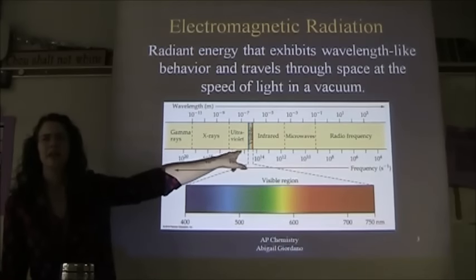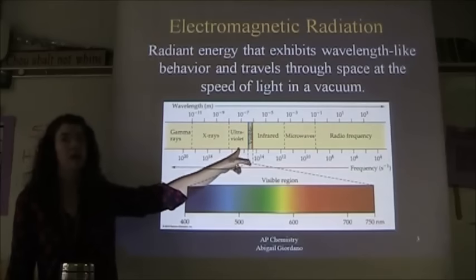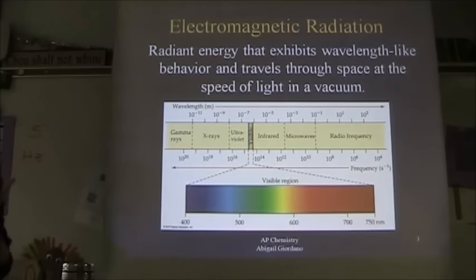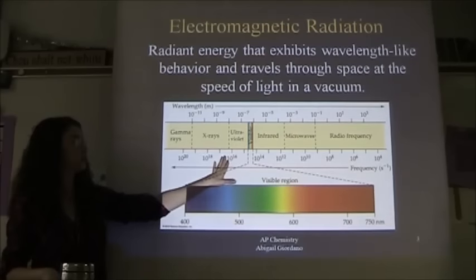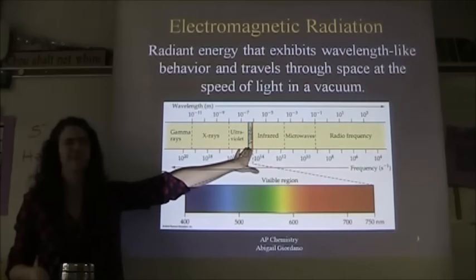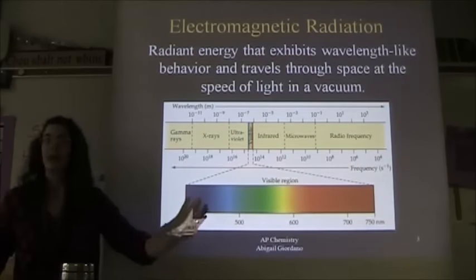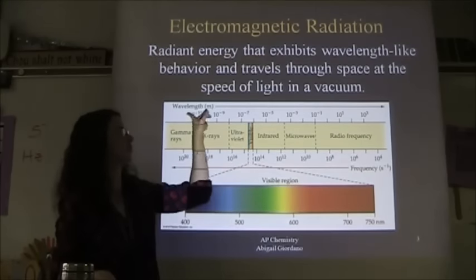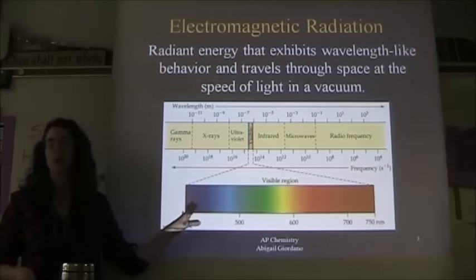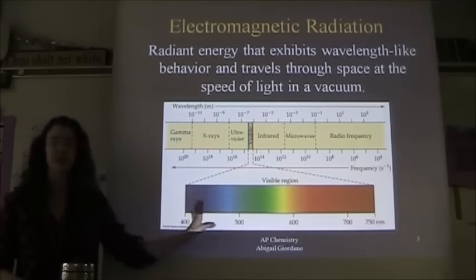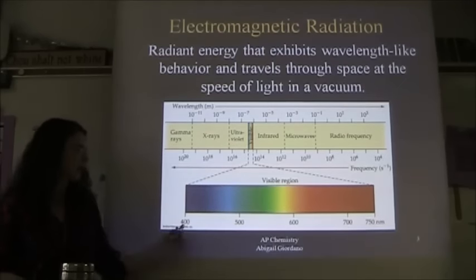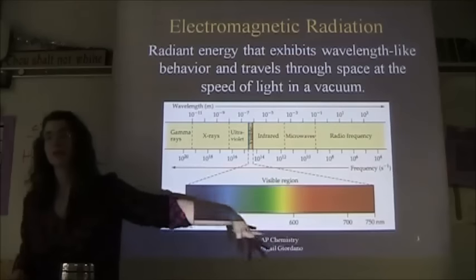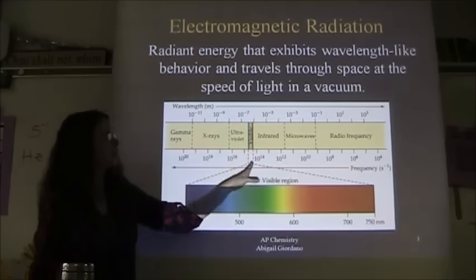Ultraviolet radiation is something we hear about a lot in summer. It's dangerous — it can cause skin cancer, burn you, and if it gets in your eyes it can burn your retina. Visible light, on the other hand, is not dangerous. In the visible light spectrum, violet has the shorter wavelengths and red has the longer wavelengths.